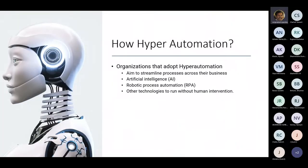We are convinced that hyper automation is here and will be in the future. So as an individual, if you have to prepare yourself, start learning it, or suggest team members within your organization to go ahead with it — how do you do that? What are the initial steps? For any organization adopting hyper automation, the first thing they have to do is streamline processes.